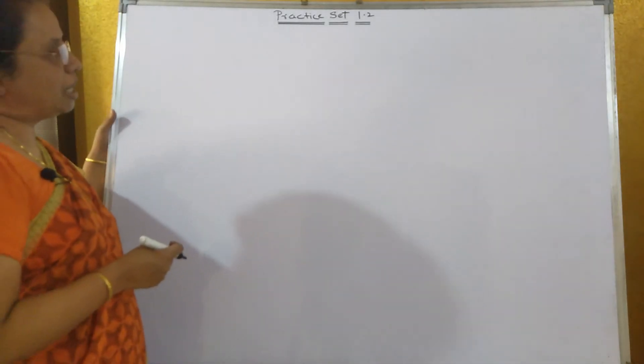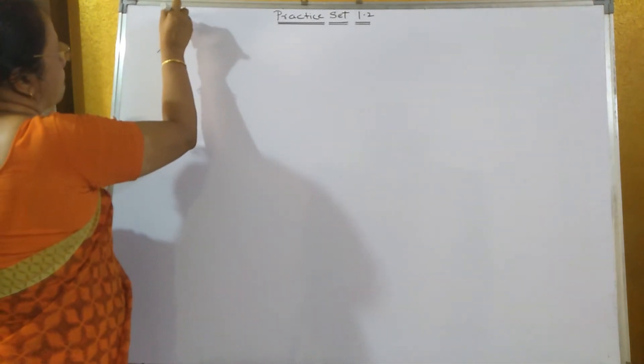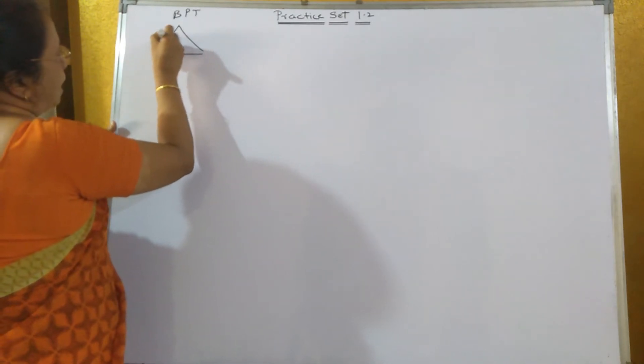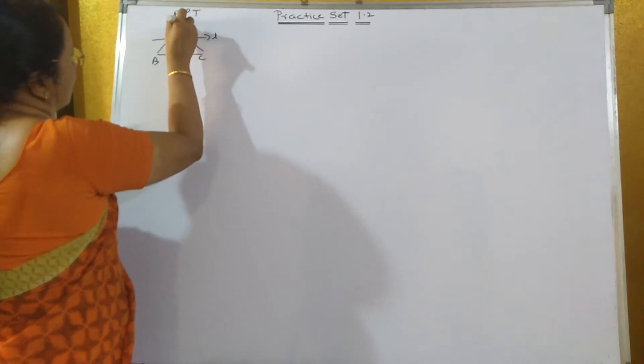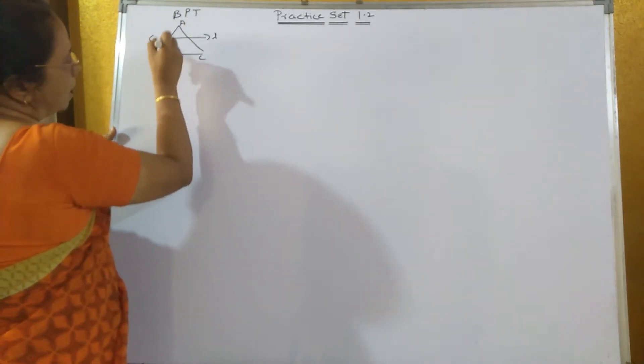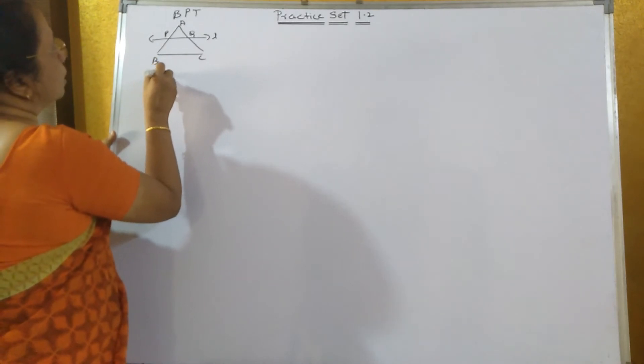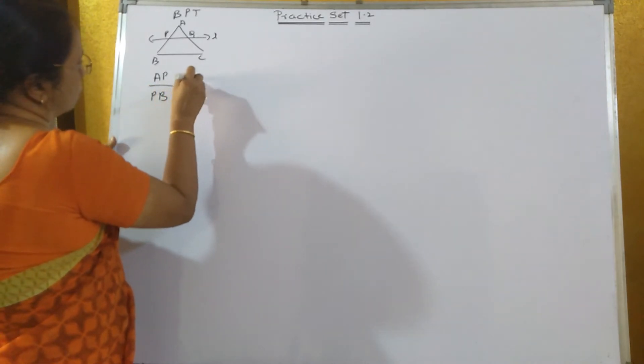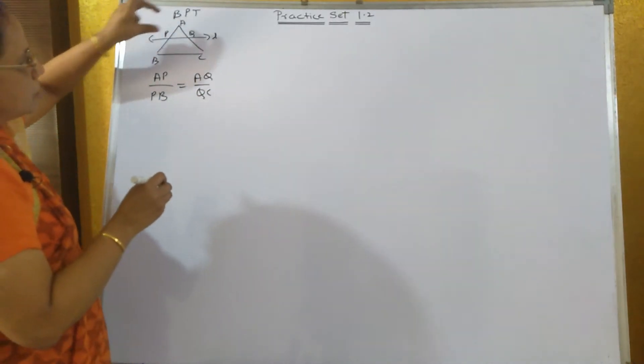Whatever theorems we have studied till now, just go through that once more. What is BPT? If a line parallel to one of the sides intersects the other two sides at points P and Q, then according to BPT, AP upon PB is equal to AQ upon QC.